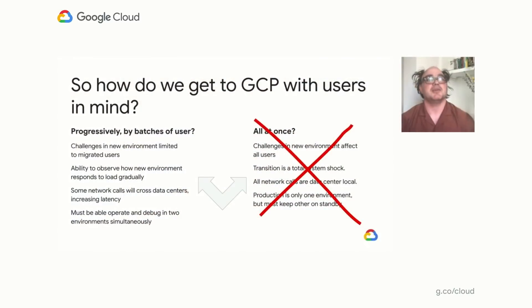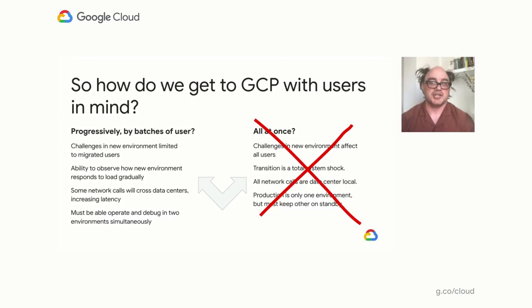So which one did we choose? We felt that overall, thinking of the users in mind, the progressive migration was going to be much better for them. On average, most users wouldn't experience any downtime or any noticeable downtime. That took some work, but we thought that if we could slowly roll into GCP, we would give our users the best experience — maybe even one they don't notice.